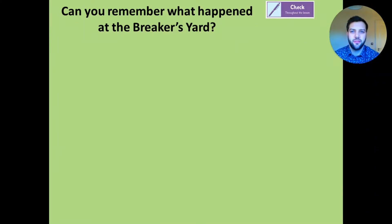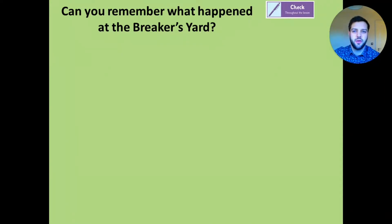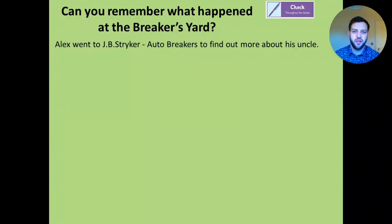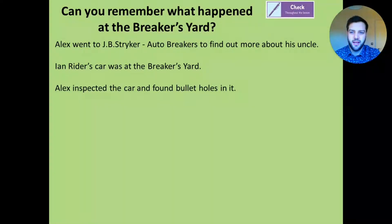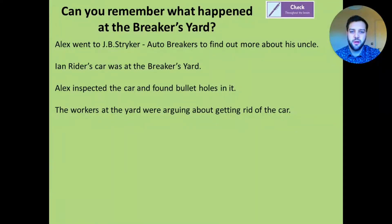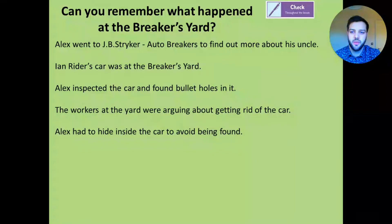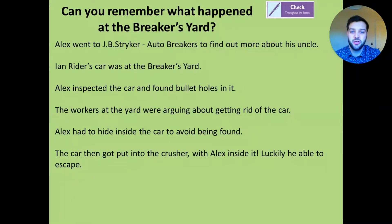Can you remember what happened at the breakers yard? So it was an earlier chapter in the book, or the scrapyard. Can you remember what actually happened to Alex there? Have a little think and then we'll go through the chapter. So, Alex went to JB Stryker Auto Breakers to find out more about his uncle. Ian Ryder's car was at the breakers yard. Alex inspected the car and found bullet holes in it. The workers at the yard were arguing about getting rid of the car. Alex had to hide inside the car to avoid being found. The car then got put into the crusher with Alex inside it. Luckily he was able to escape.